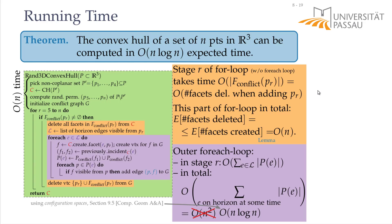This algorithm generalizes to higher dimensions using a similar concept: start with enough points for a convex hull, then incrementally add points in random order using a visibility-based conflict graph. In d dimensions the expected running time is O(n^⌊d/2⌋), and this is worst-case optimal since it matches the complexity of the convex hull itself. So the expected running time is worst-case optimal — no algorithm can do better.